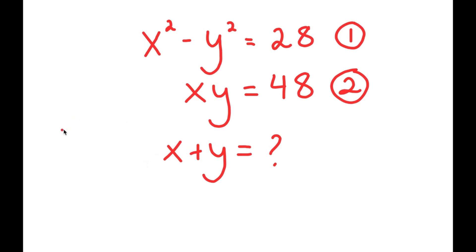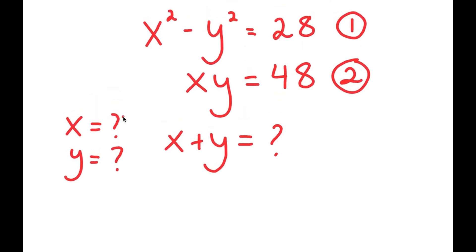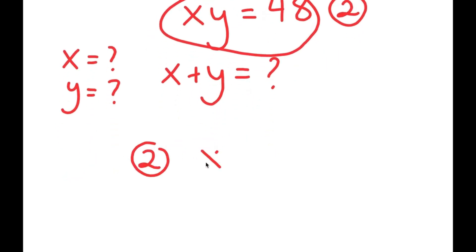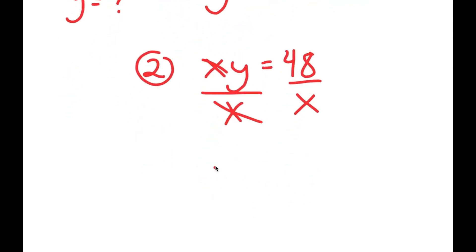Finding this is straightforward once we find the values of x and y. To start, I'm going to use equation two: x times y equals 48. I'll solve for one variable in terms of the other — in this case, I'll solve for y by dividing both sides by x, giving y equals 48 over x.